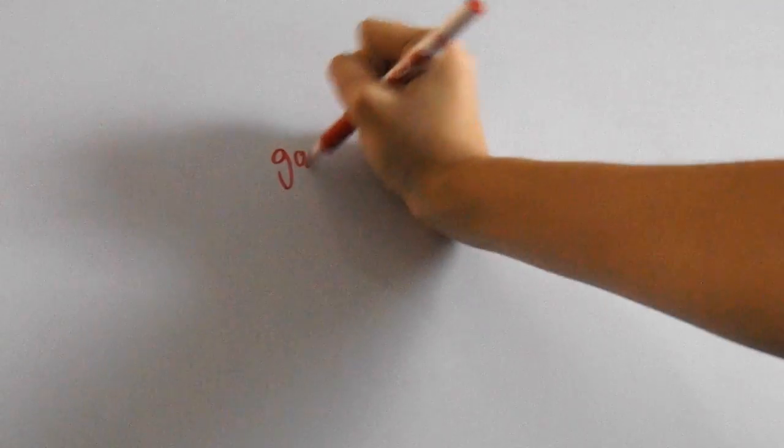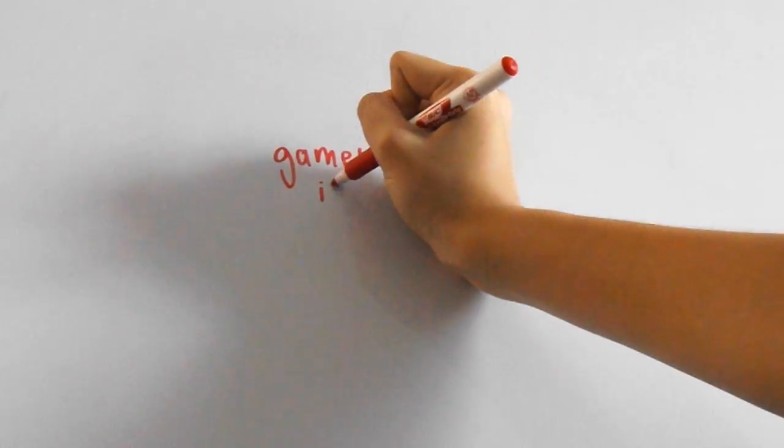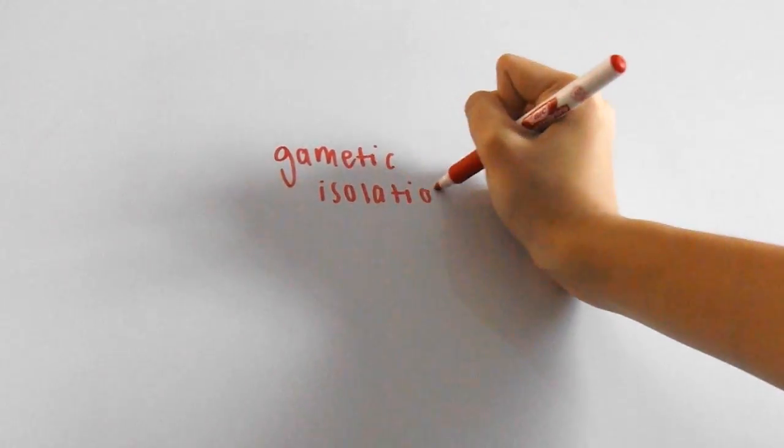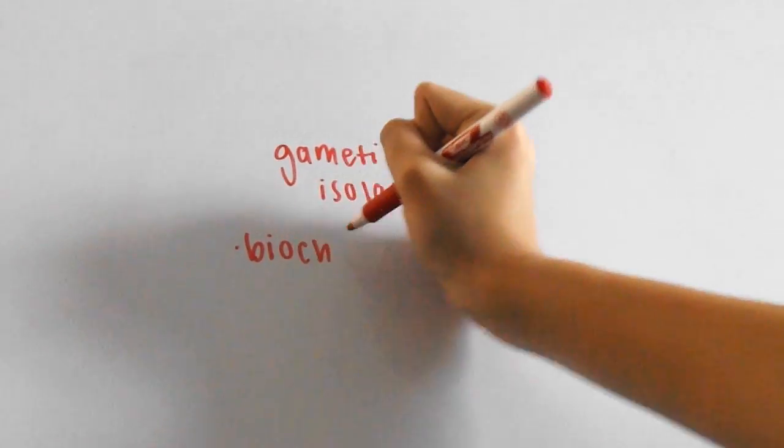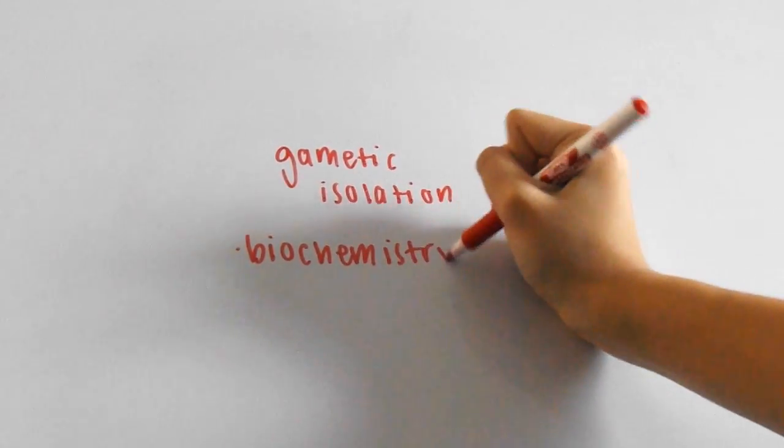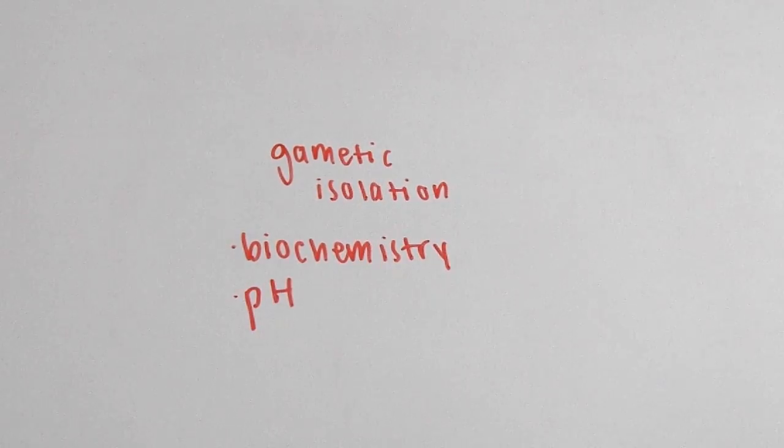Finally, there's gametic isolation, which is when sperm of one species are unable to fertilize the eggs of another species simply because of biochemical mechanisms, pH, or other variables.